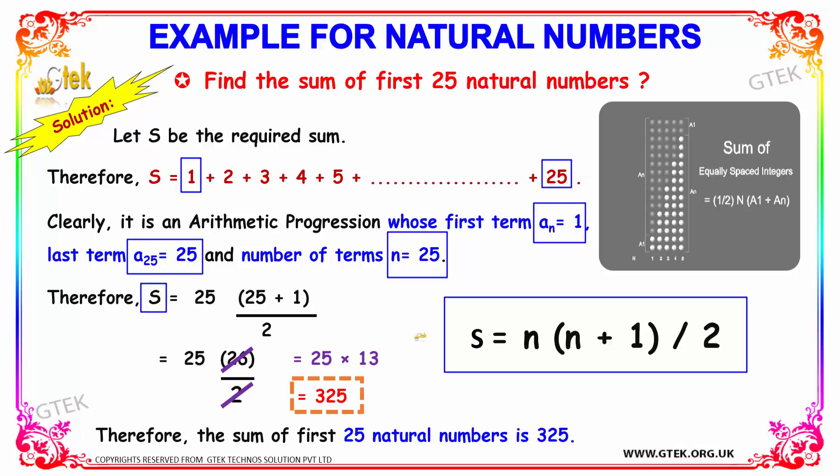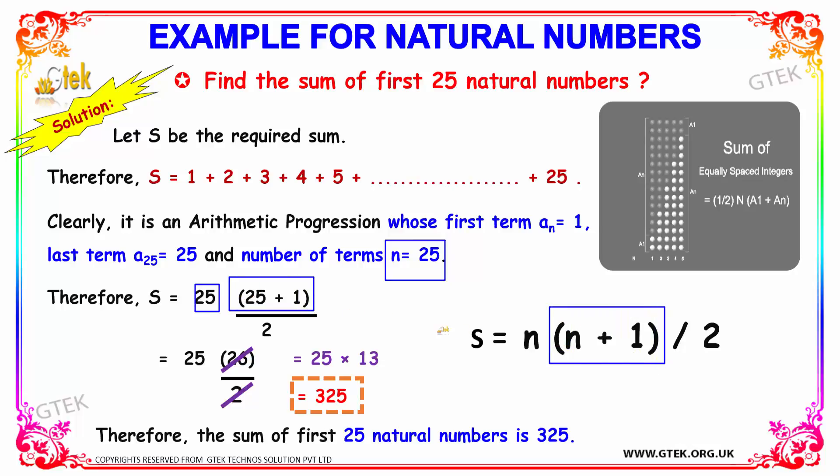So S equals... since n is there, we know that n = 25. So 25 times (n + 1), right? So 25 plus 1, divided by 2.